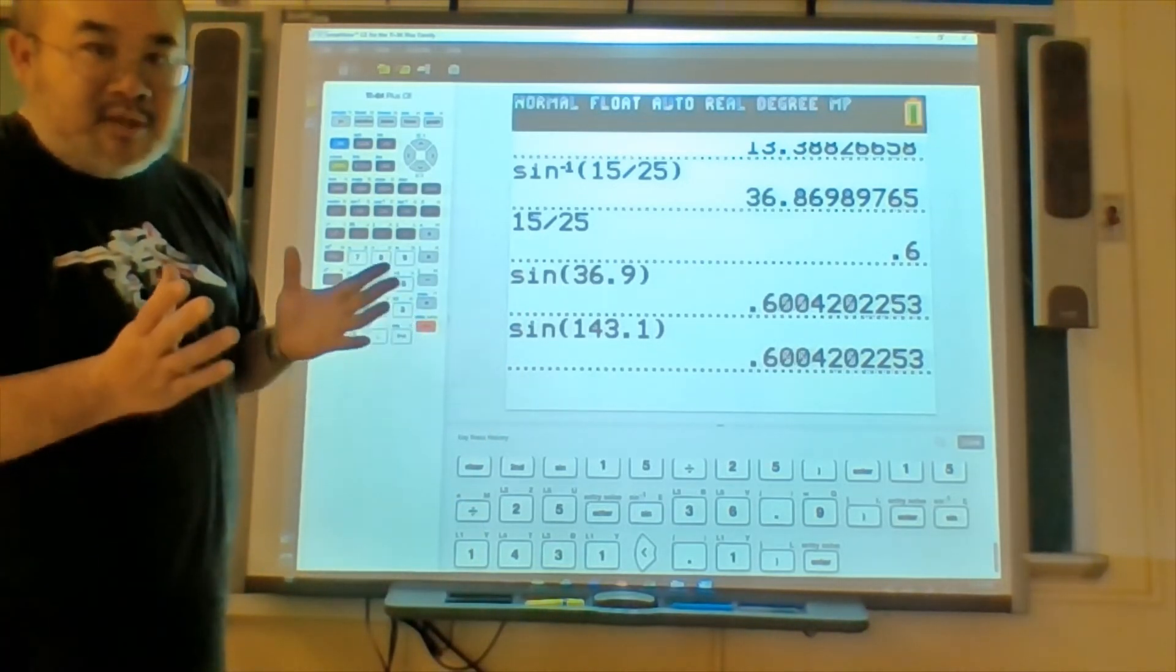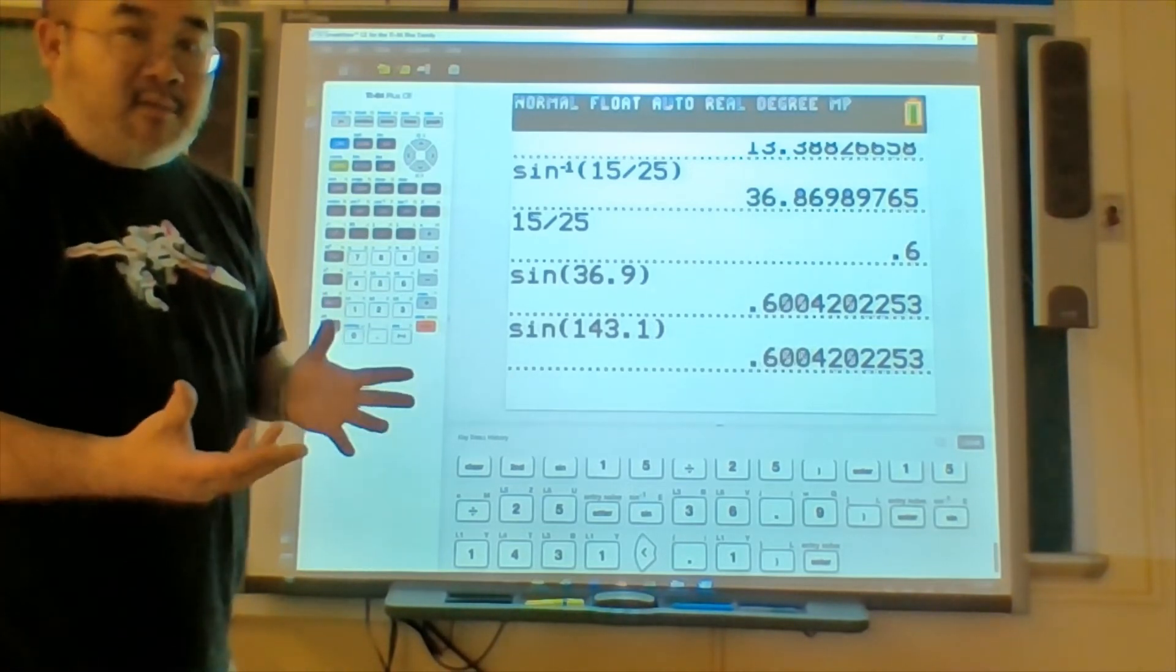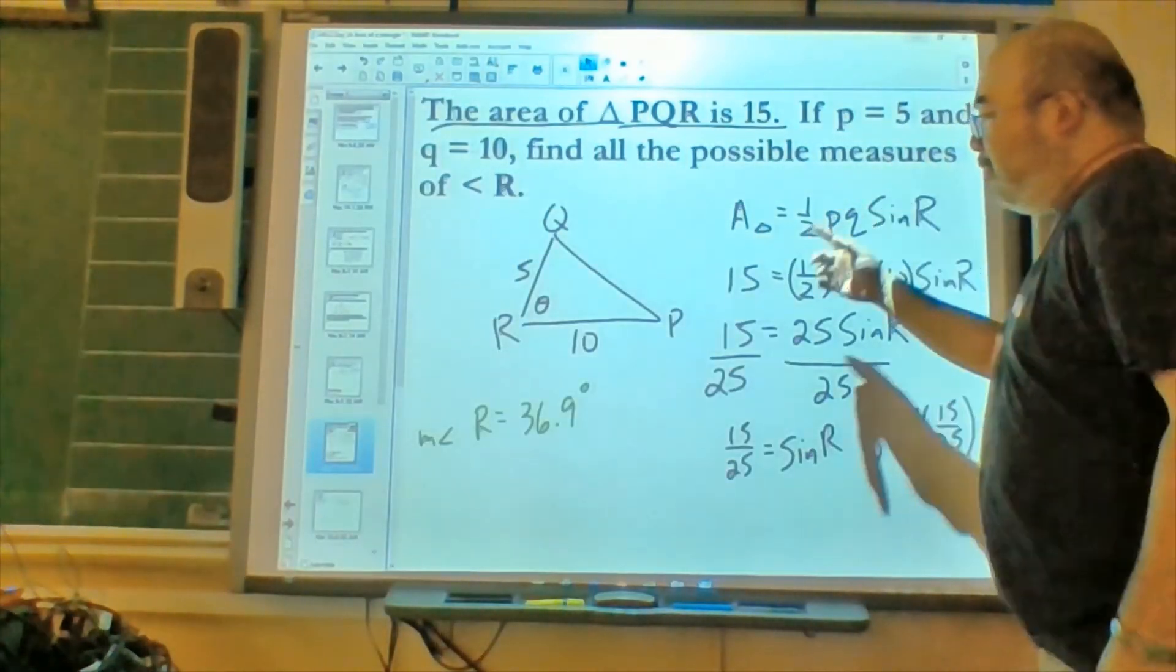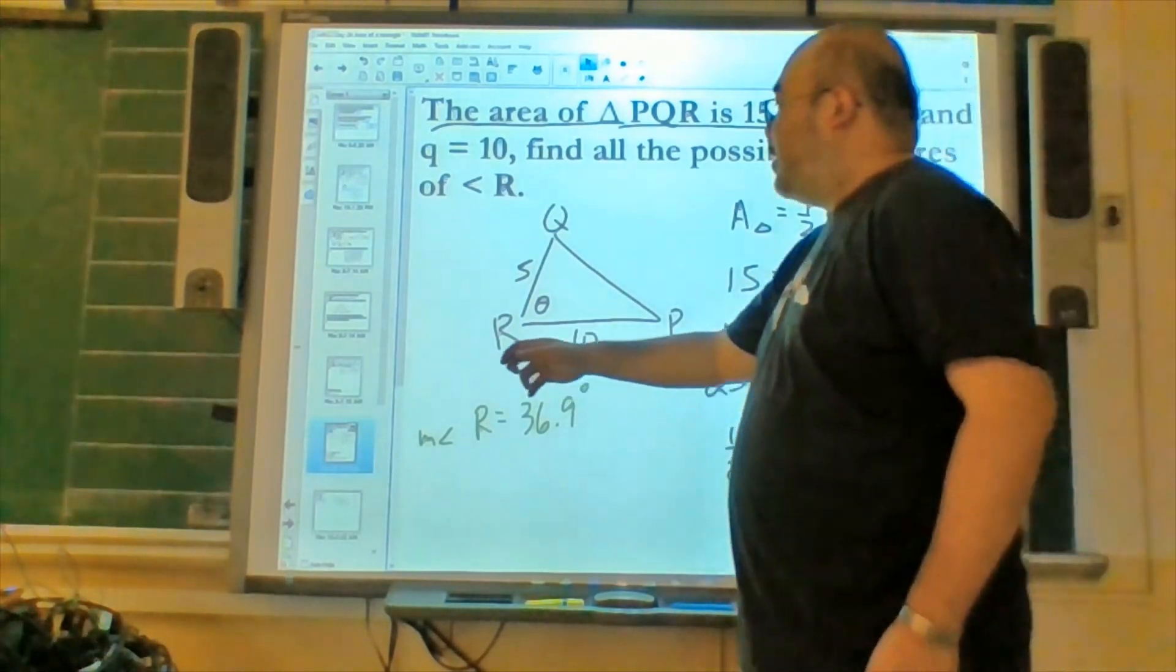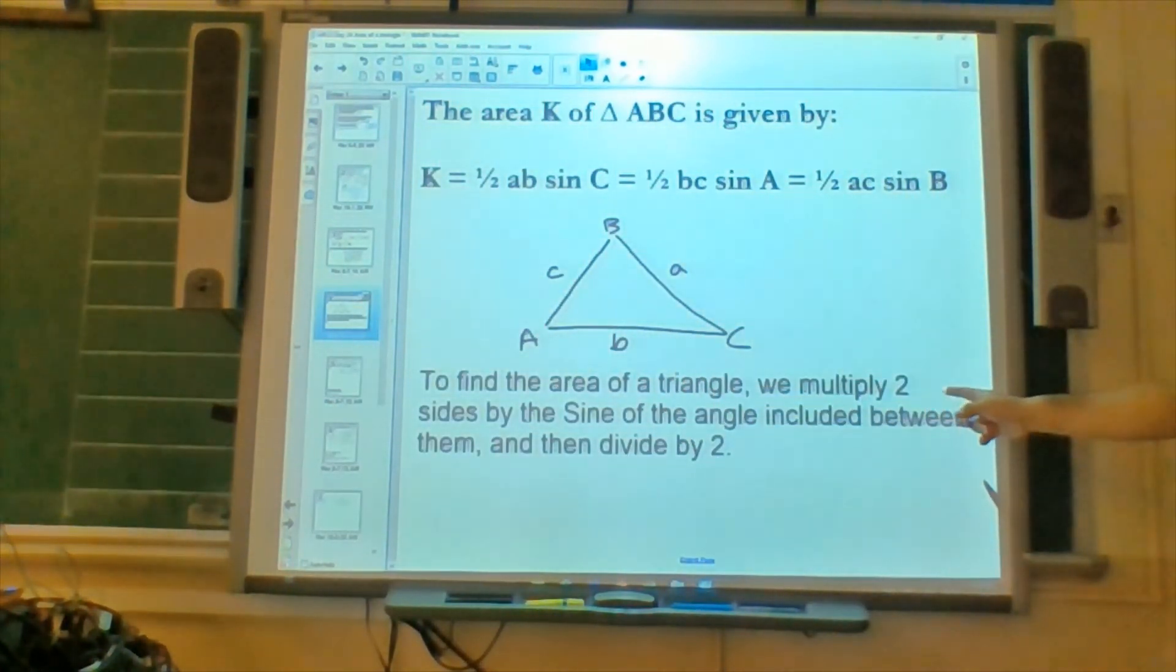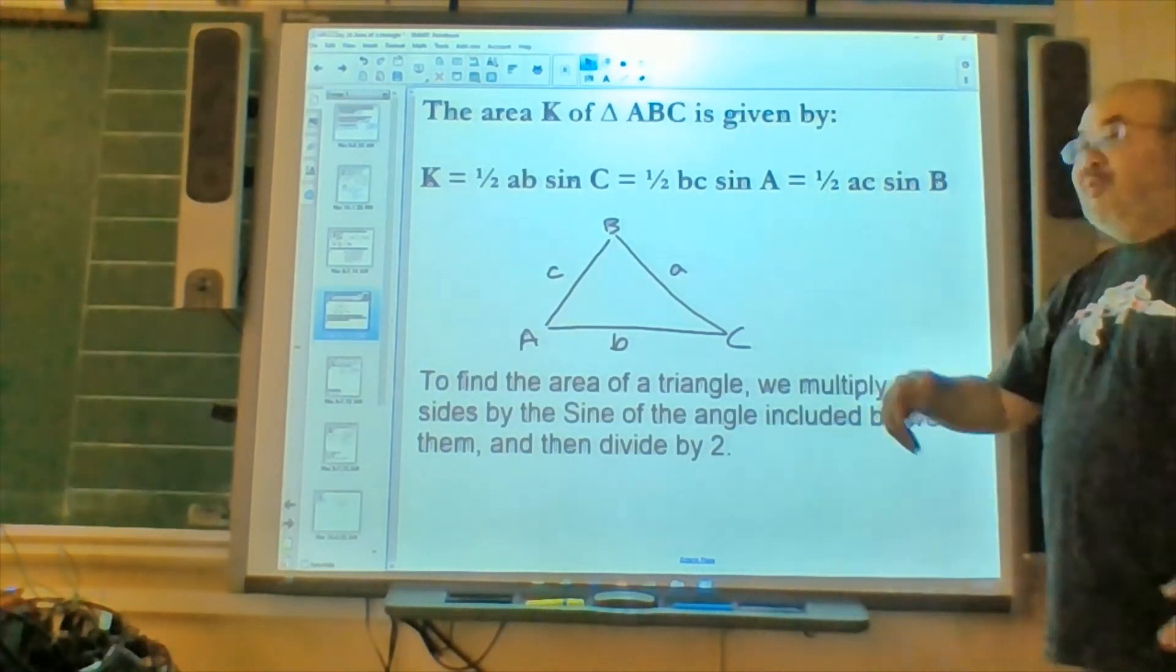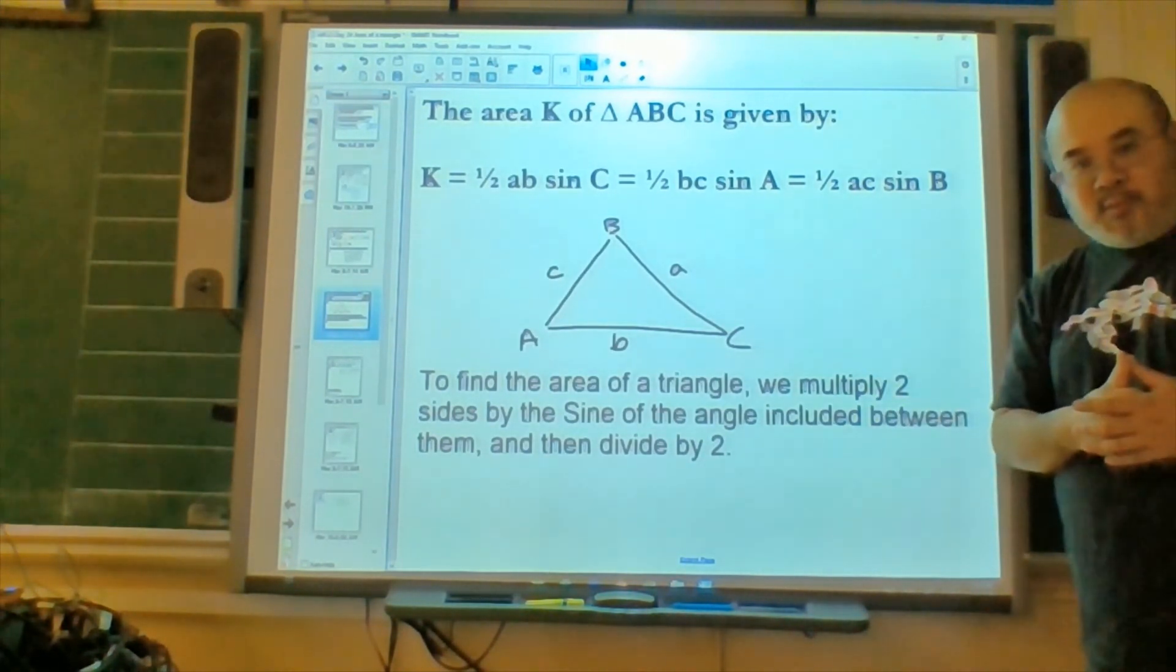This relationship would be very important for our next lesson. But for now, we go back and see that the area of the triangle, the area of the triangle, is going to be, in this case, the area of the triangle multiply two sides by the sine of the angle included between them and divide by two, or in this case, one half AB sine C, one half AC sine A, and one half AC sine B.